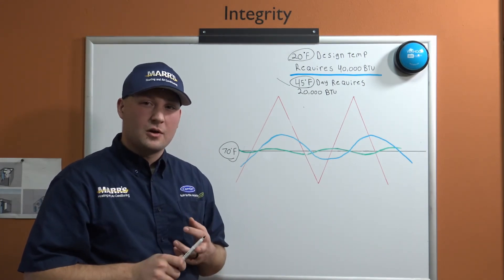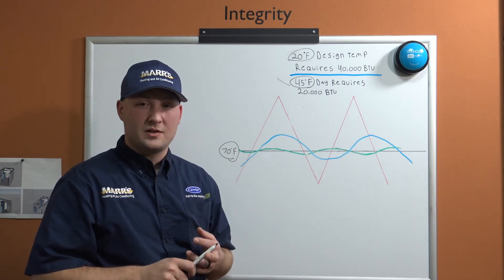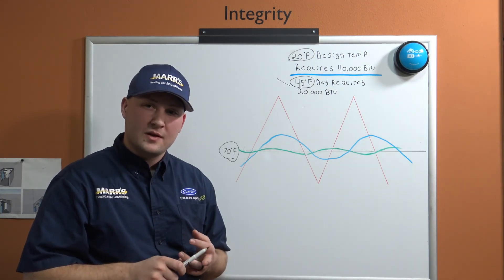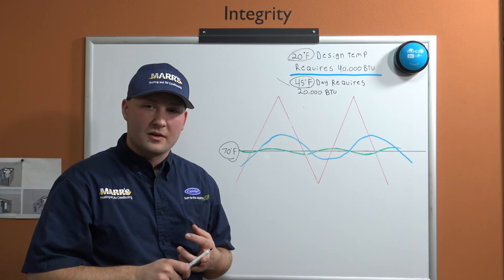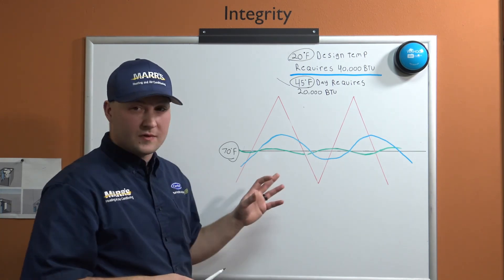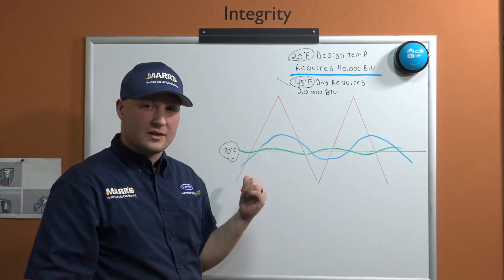What that means is longer run times, and because we have longer run times, our fan is running more. Our fan is variable speed too, so we're running at lower speed, which means less noise. We're filtering more air because we're moving more air in the house. Our outdoor equipment on these systems are a lot quieter than your typical two-stage and single-stage equipment. They're also more efficient.